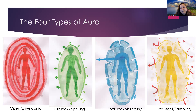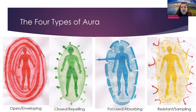Then we have the fourth aura and type: the Reflector, whose aura is resistant and sampling. They have a built-in mechanism for a Teflon-type of auric interaction with others. They are very open — they have nine open centers — open for interaction, for influence, for reading the other, for reading the program and the energy. The Projector is here to read the energy of the other; the Reflector is here to sample and measure and gauge the other and the whole community. There are only about 1.6% Reflectors, so on every hundred people there is one.